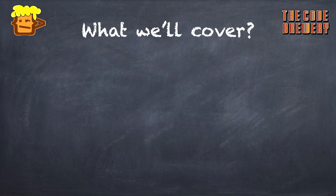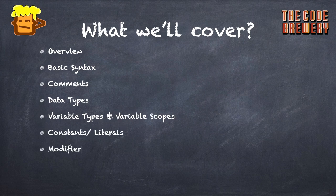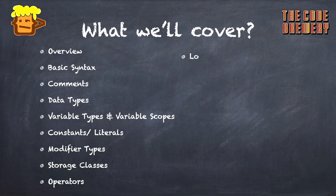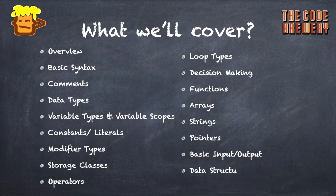We have a look at C++ overview, its basic syntax, comments, data types, variable types and variable scopes, constants or literals, modifier types, storage classes, operators, loop types, decision making statements, functions, arrays, pointers, strings, basic input/output, and lastly data structures. So are you excited like me to get started?